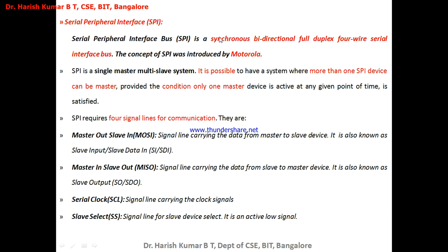The next onboard communication interface is SPI — Serial Peripheral Interface. SPI is synchronous, bi-directional, and full-duplex, unlike I2C which was half-duplex. Full-duplex means bi-directional communication can happen simultaneously — from master to slave and slave to master at the same time. SPI uses a four-wire serial interface bus, compared to I2C's two wires. SPI is a single-master, multi-slave system.